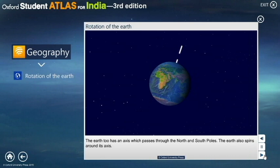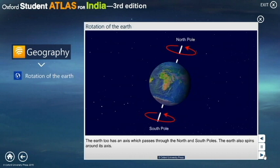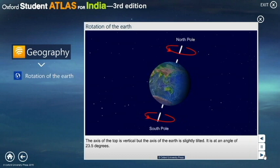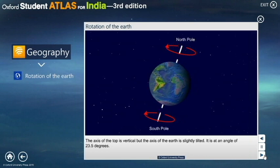The Earth too has an axis which passes through the north and south poles. The Earth also spins around its axis. Can you spot the difference between the Earth's axis and the axis of the top? The axis of the top is vertical, but the axis of the Earth is slightly tilted. It is at an angle of 23.5 degrees.